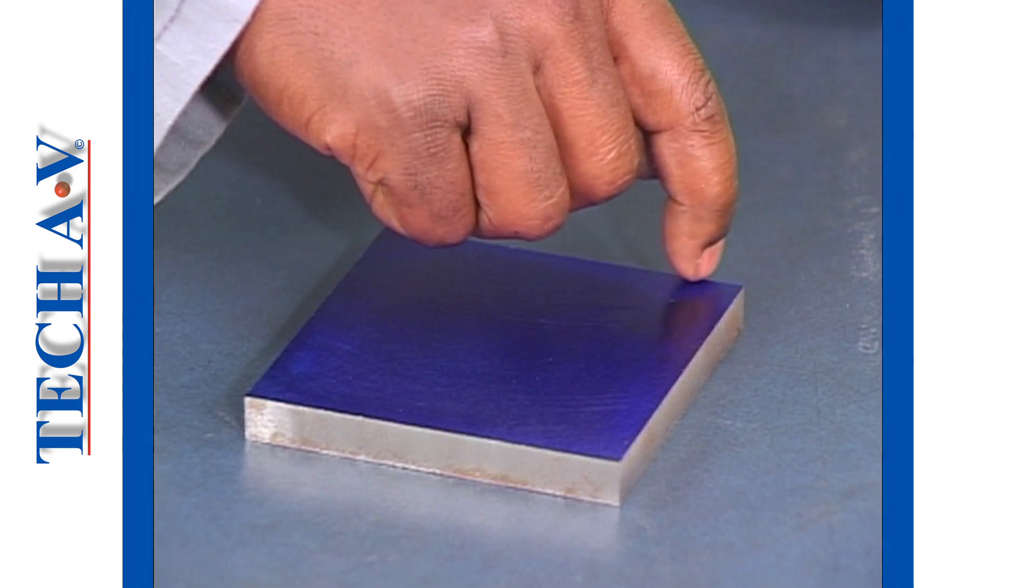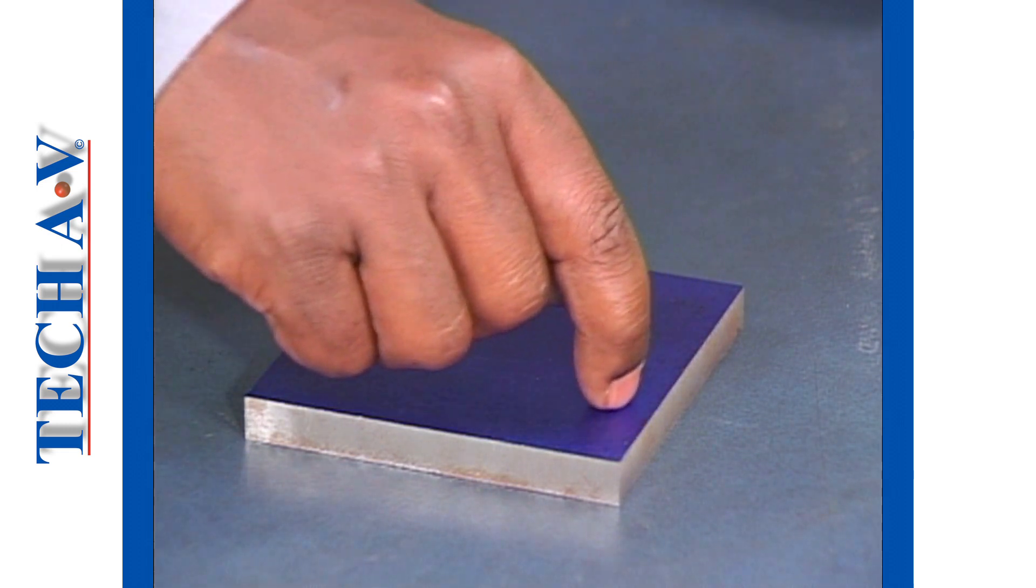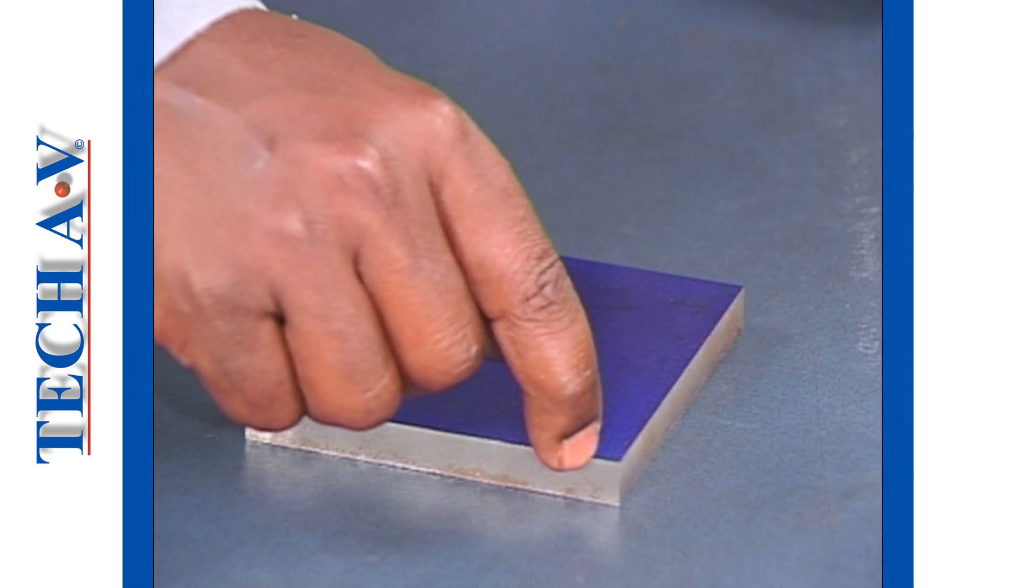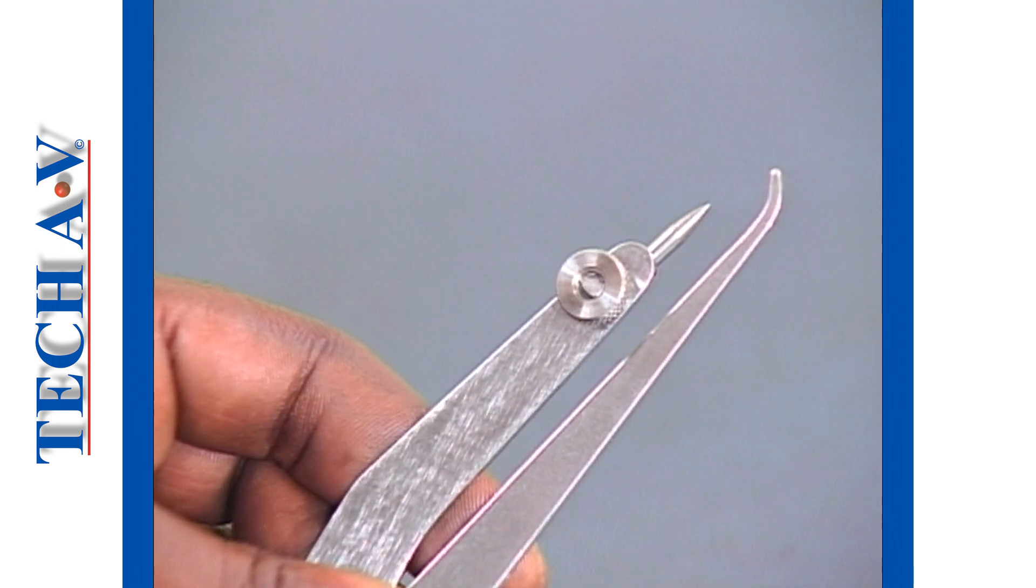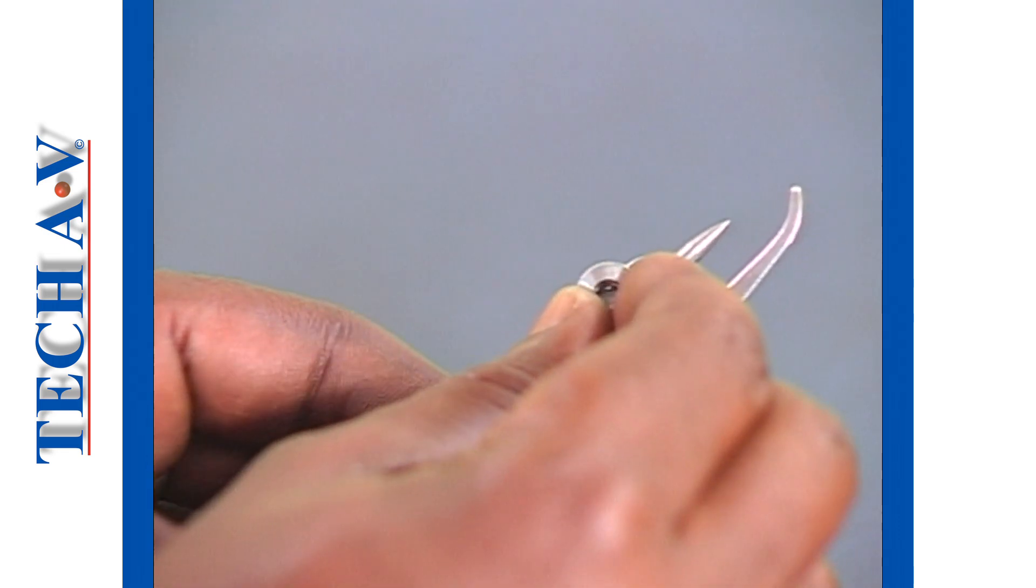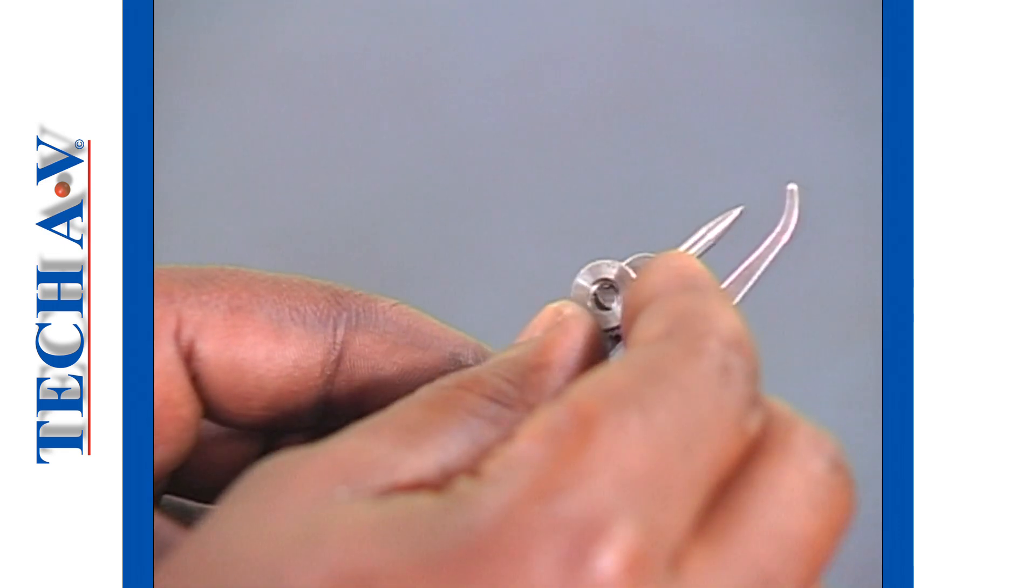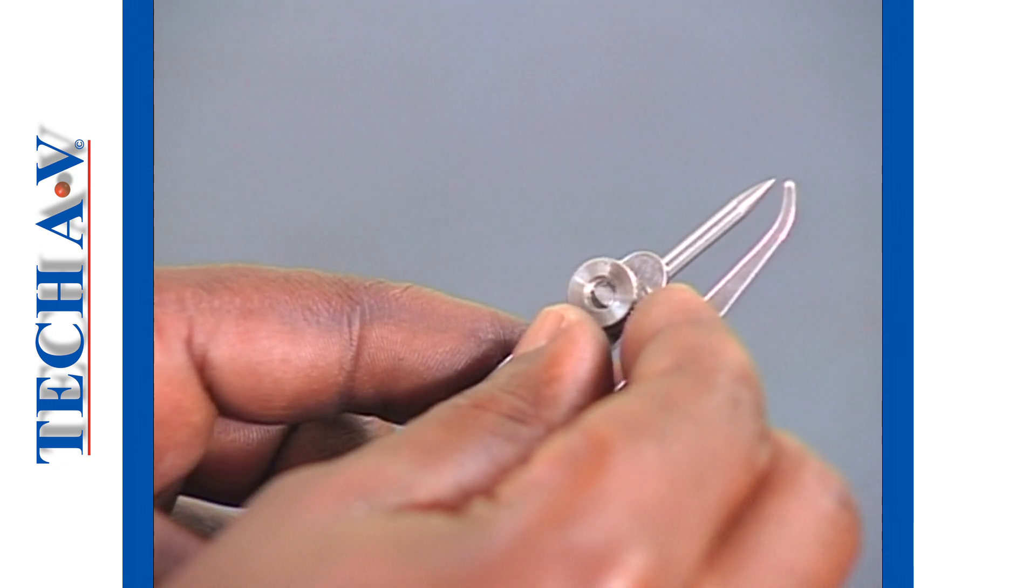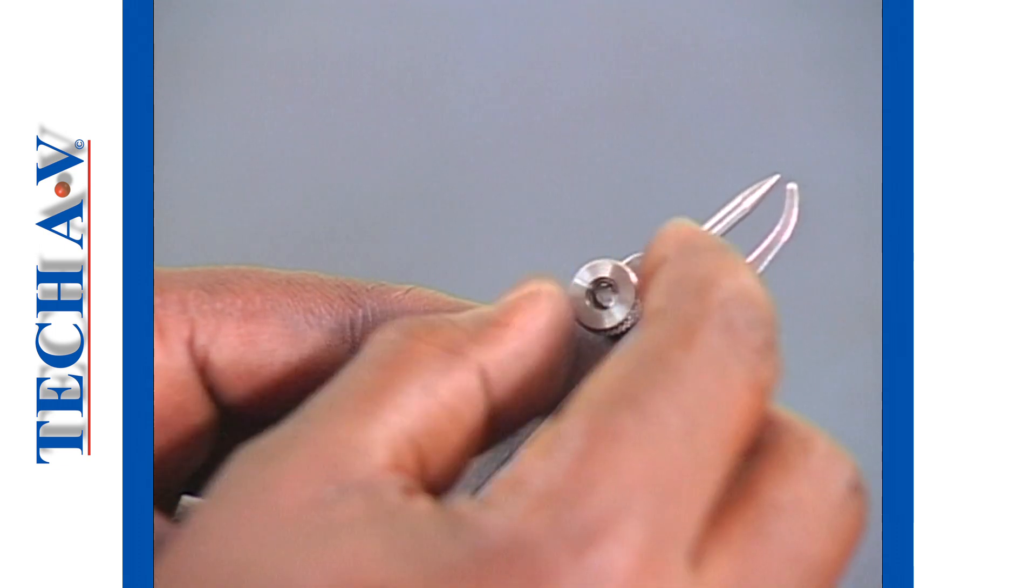As an exercise, we shall scribe a centre line 15mm from this edge. First, we prepare the caliper by closing the legs and adjusting the scriber point until it is in line with the end of the curved leg.